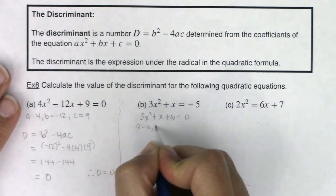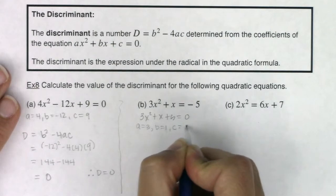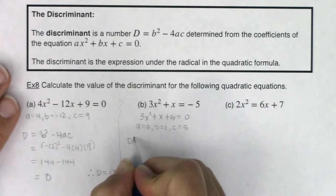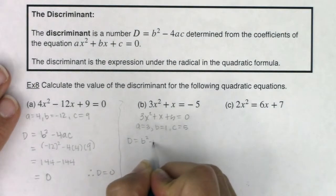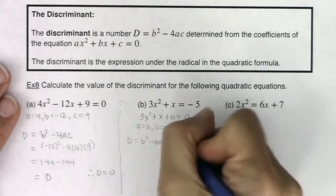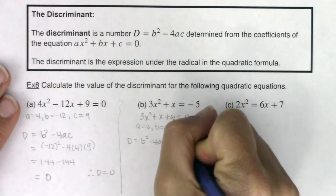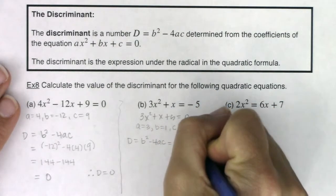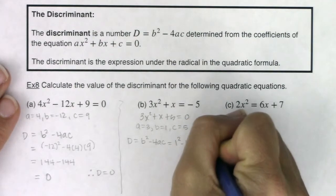So we know a is 3, b is 1, c is 5. Let's get our discriminant. So D is going to be equal to b squared minus 4ac. So in this case we will have 1 squared minus 4 times 3 times 5.